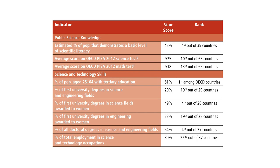In public science knowledge, we are first out of 35 countries in those that display a basic level of scientific literacy. And that sounds great, but if you look at our percentage, only 42% of adult Canadians have a basic level of science literacy — and we're first in the world among the countries that were surveyed. So that should be something for us to think about more critically.